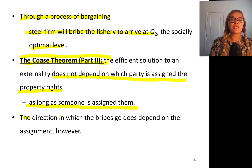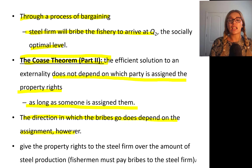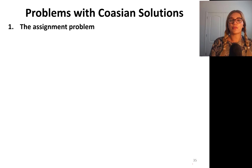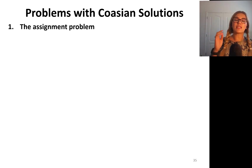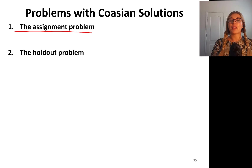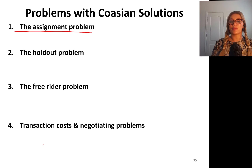The direction in which the bribes go does depend on the assignment of property rights. However, if the property rights are given to the steel firm, then fishermen must pay bribes to the steel firm. Problems with Coase solutions — this is also something professors love to ask. Number one is the assignment problem. Number two is the holdout problem. Number three, the free rider problem. Number four, transaction costs and negotiating problems.